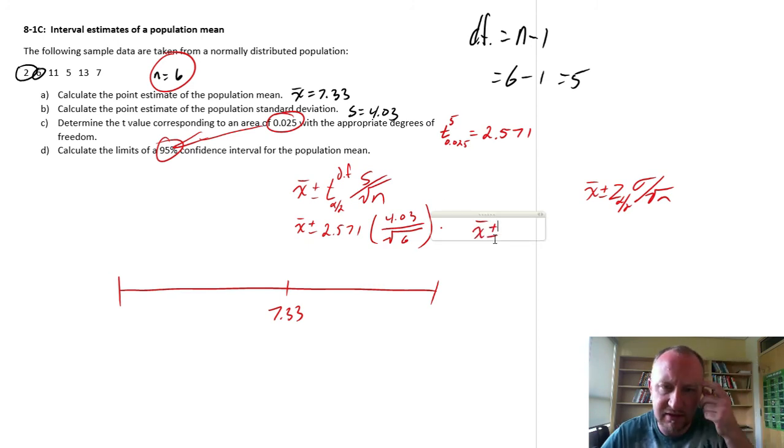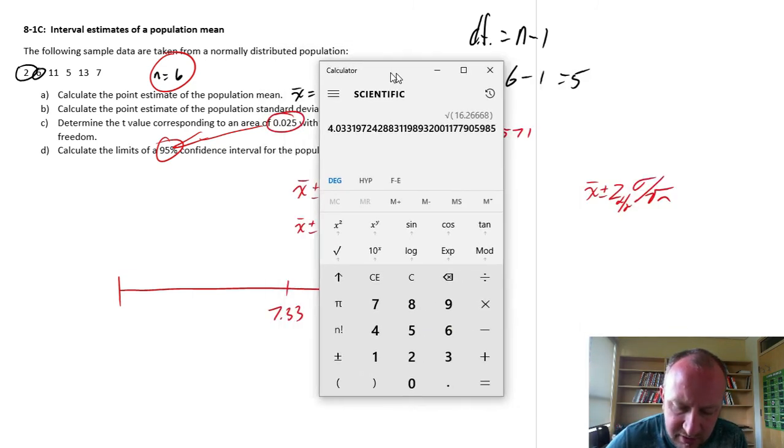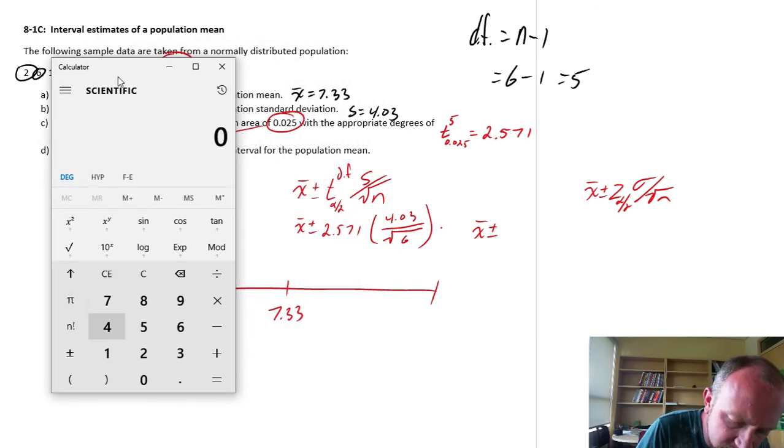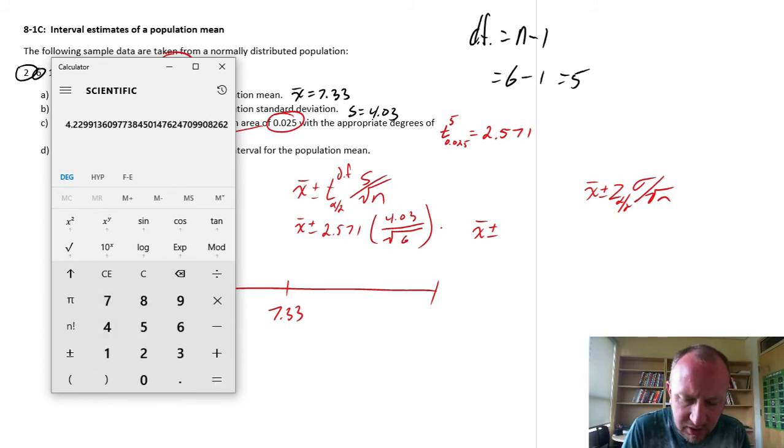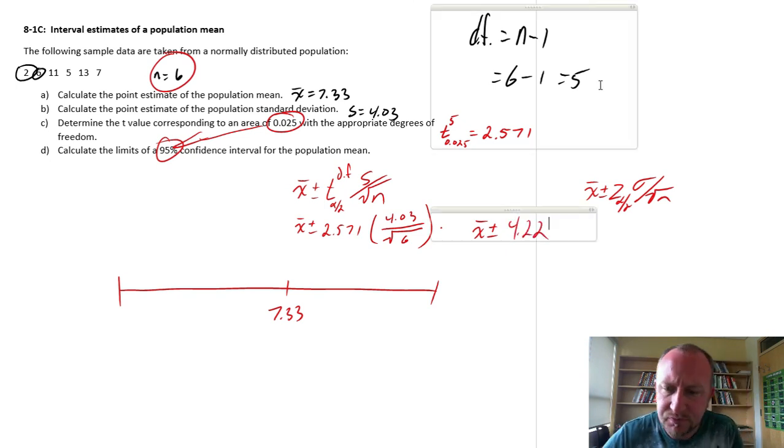Let's come back over here, and let's just figure out this margin of error, in an intermediate step, that might make it a little bit easier for us. So, 4.03, divided by the square root of 6, times 2.571. So, 4.22. Alright, that makes it a little bit easier. Okay, we'll round that.